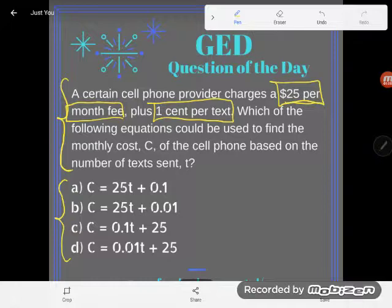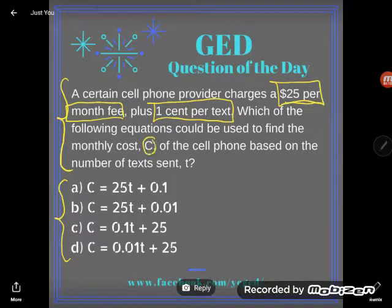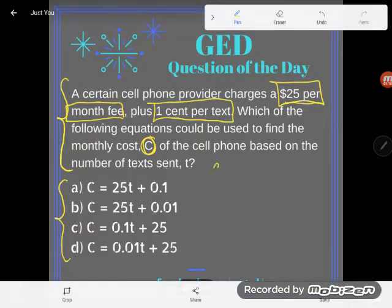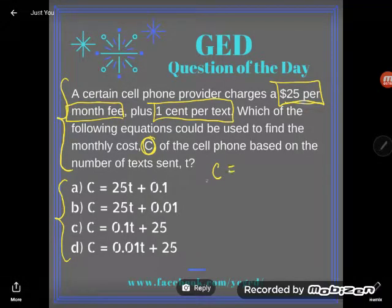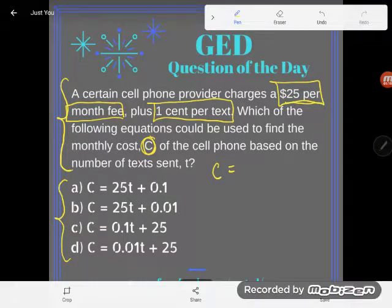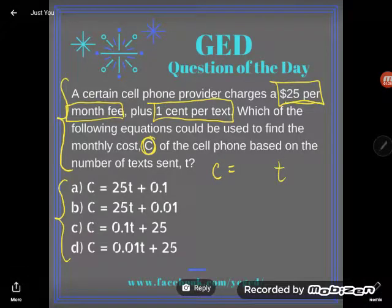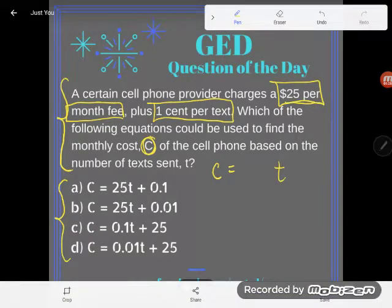Which of the following equations could be used to find the monthly cost C? So I want to set up an equation that I use to find the monthly cost C. I want to find out what C is equal to of the cell phone based on the number of texts sent T. So based on the number of texts sent T means I'm going to have a T somewhere in my equation. But of course, we know they don't just charge you, oh, the number of texts is the same as our charge. No, they give us a little formula here, a little way to figure out how much they're going to charge us.